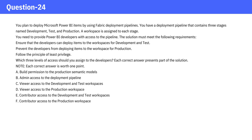You plan to deploy Microsoft Power BI items by using Fabric deployment pipelines. You have a deployment pipeline that contains three stages named development, test, and production. A workspace is assigned to each stage.